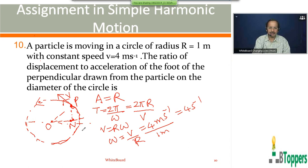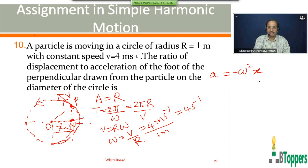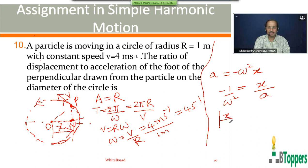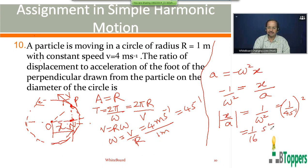The acceleration of point N — the foot of the perpendicular — is given by minus omega squared times x, where x is the instantaneous displacement of point N from the center measured along the diameter. So the ratio of the magnitude of displacement to acceleration of point N equals 1/omega squared, that is 1/(4 per second) squared, which equals 1/16 second squared. This is the answer.